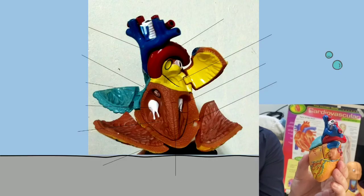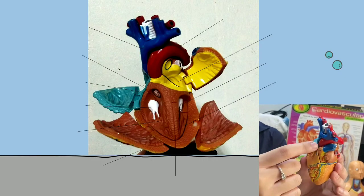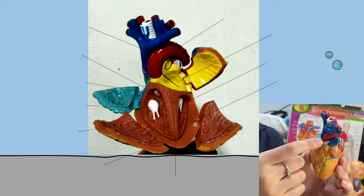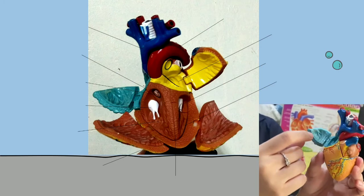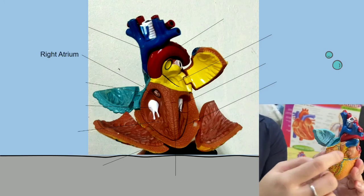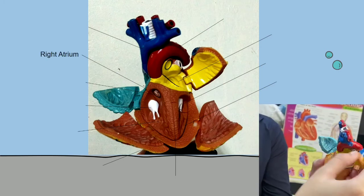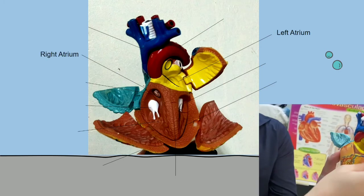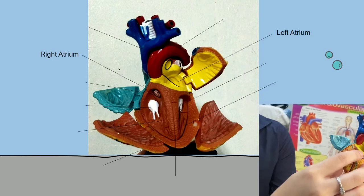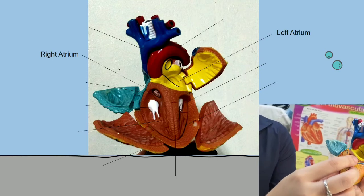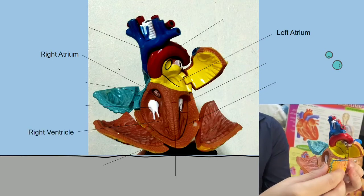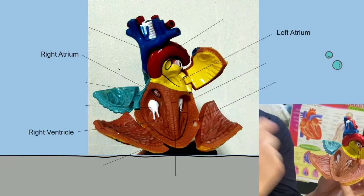Fun fact: your heart is the same size as your fist. So we have different parts of the heart. We have four chambers. The two upper chambers are called the atria — this is the right atrium and this is the left atrium. And the two lower chambers are called the ventricles — this is the right ventricle and the left ventricle.